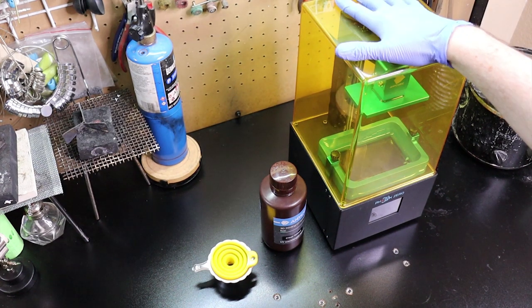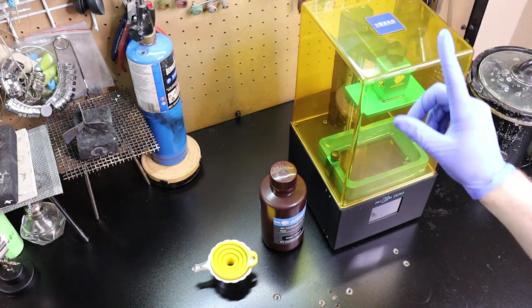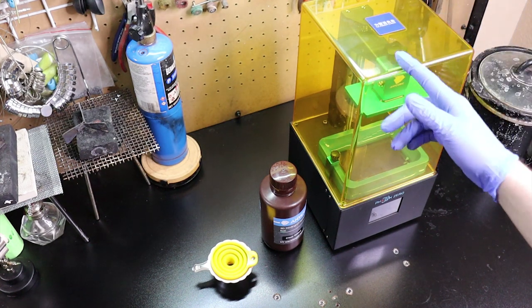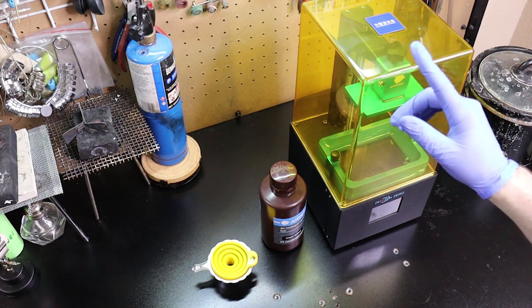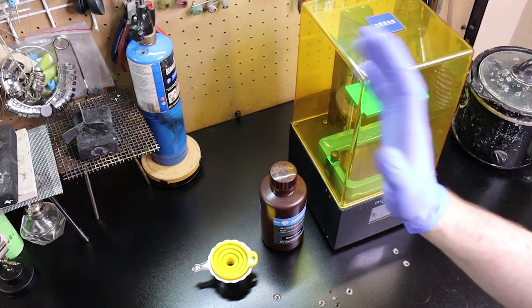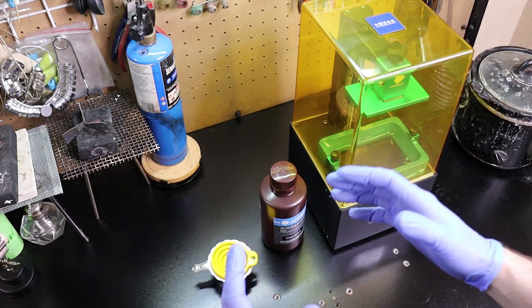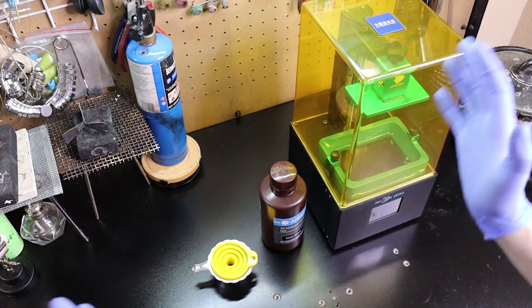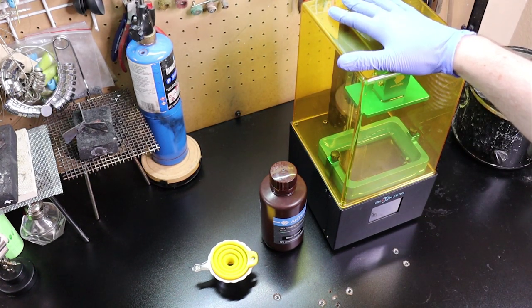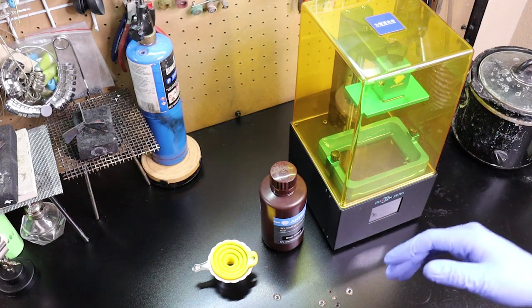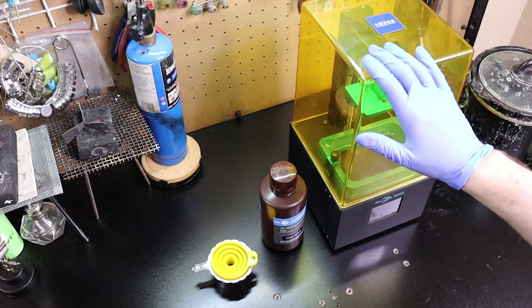One thing this has on the normal Photon is when it's running with this over the top, you cannot smell the resin whatsoever. As soon as I take this off, I can smell it. The normal Photon has a little fan inside of it, and as soon as you turn it on with nothing in it, it just smells like resin in the entire room. I can be in the room with this and have no problems. There is no active filter going on with this one at all, so that's a major plus for me.